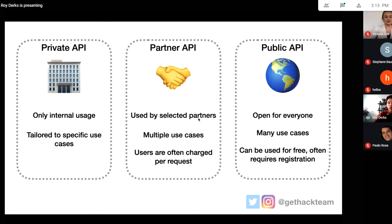A public API can be used by anyone, and sometimes they have authorization, sometimes they don't. There are public APIs for search indexes, cryptocurrency prices, or weather — information that should be available to anyone. They're specifically tailored to do as much as possible. If you change them and add a field it's not a problem, but if you delete a field it will cause problems because you want to know how people are using it so you don't break anything.